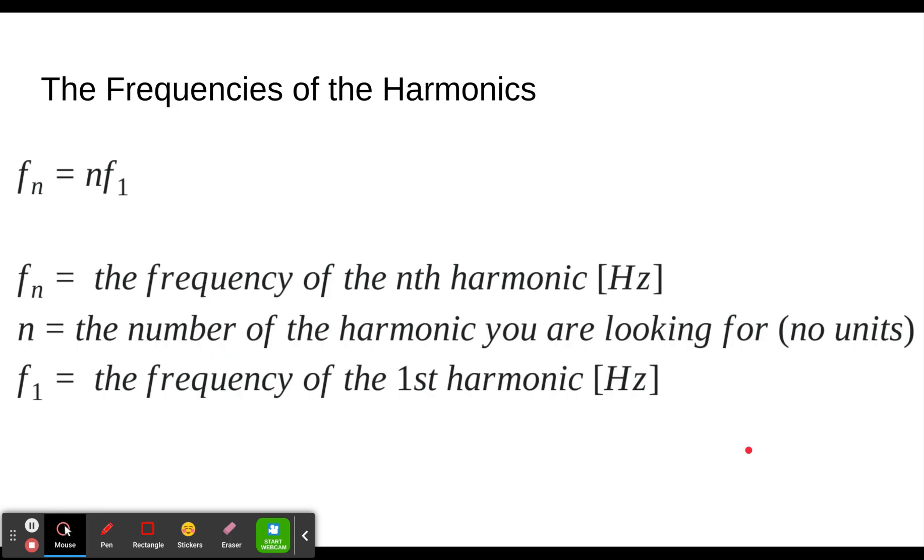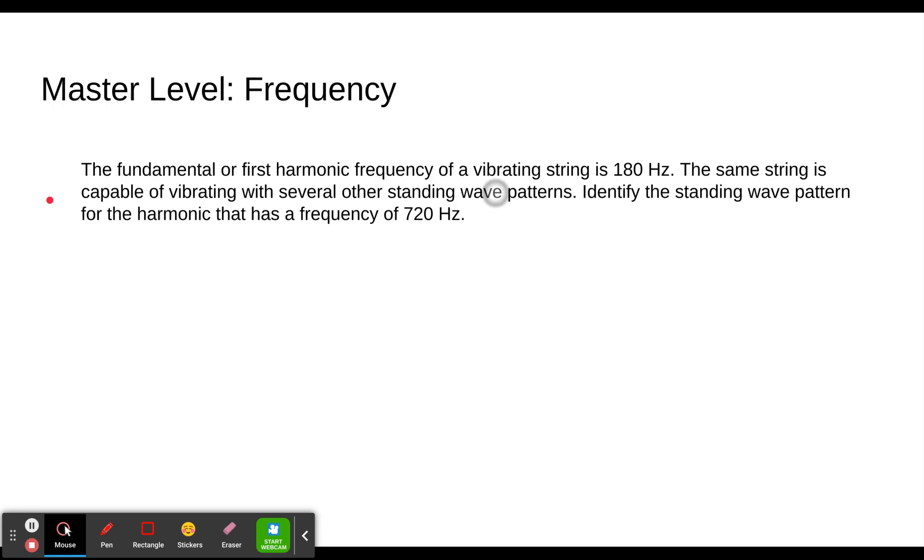The next level has you learn about the frequencies of those harmonics. How fast is the string going back and forth for comparing the different harmonics to each other? We have an equation for that. The frequency of our first harmonic, the base frequency of the string is frequency one. If we multiply that times the number of the harmonic you're looking for, for example, if we're looking for the second harmonic, we'd multiply the base harmonic, the first harmonic, times two for the second harmonic, and then we'd get f sub two, which is the frequency of the second harmonic.